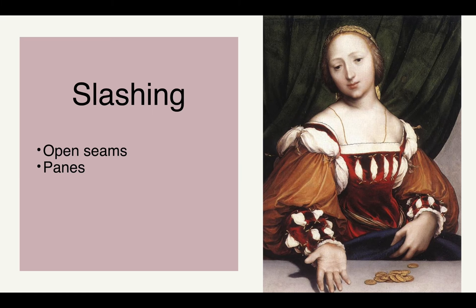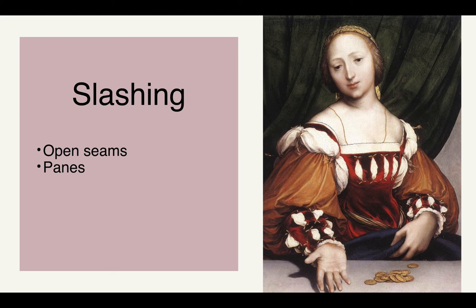We also see a greater exploration of slashing at the beginning of the High Renaissance. It used open seams as a moment to accentuate the clothes under the top garment, and later evolved into the use of panes — vertical strips of fabric worn over another layer of fabric to emulate the effect of slashing. You can see the under blouse or chemise peeking through the slashing.